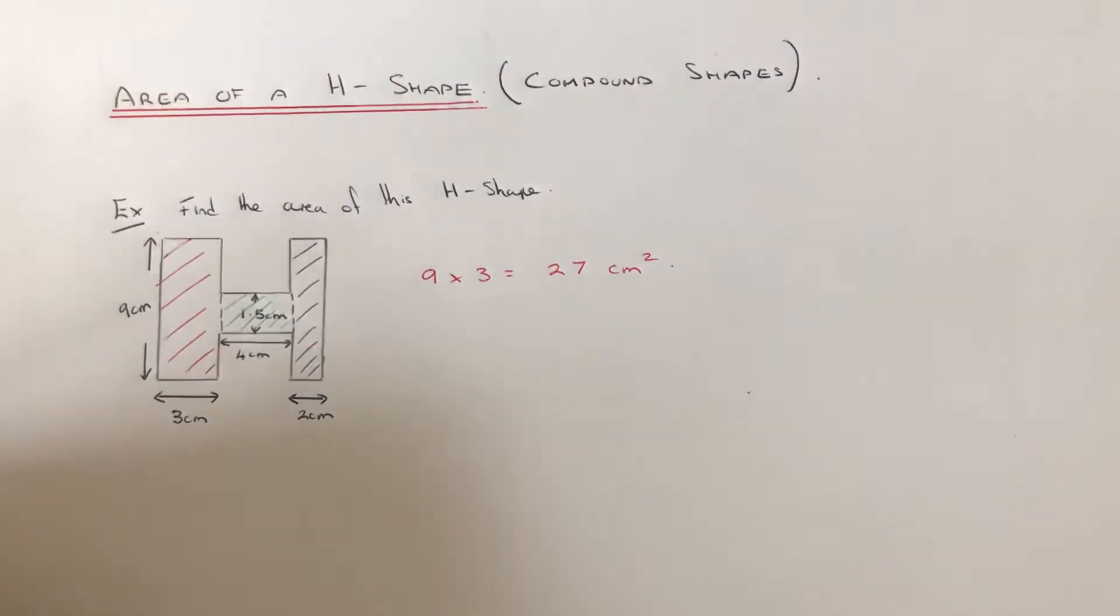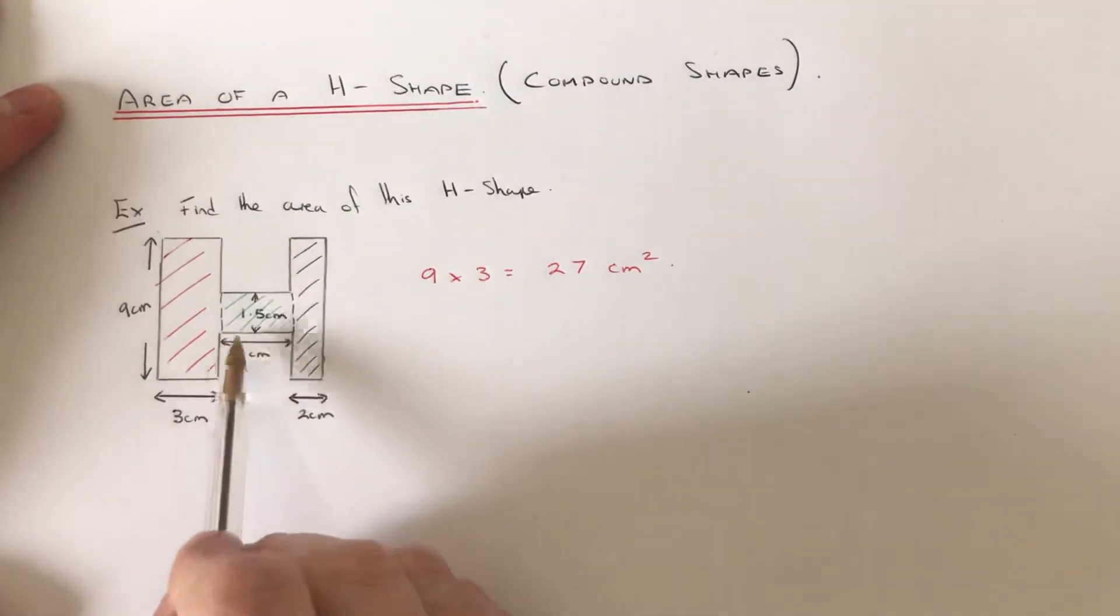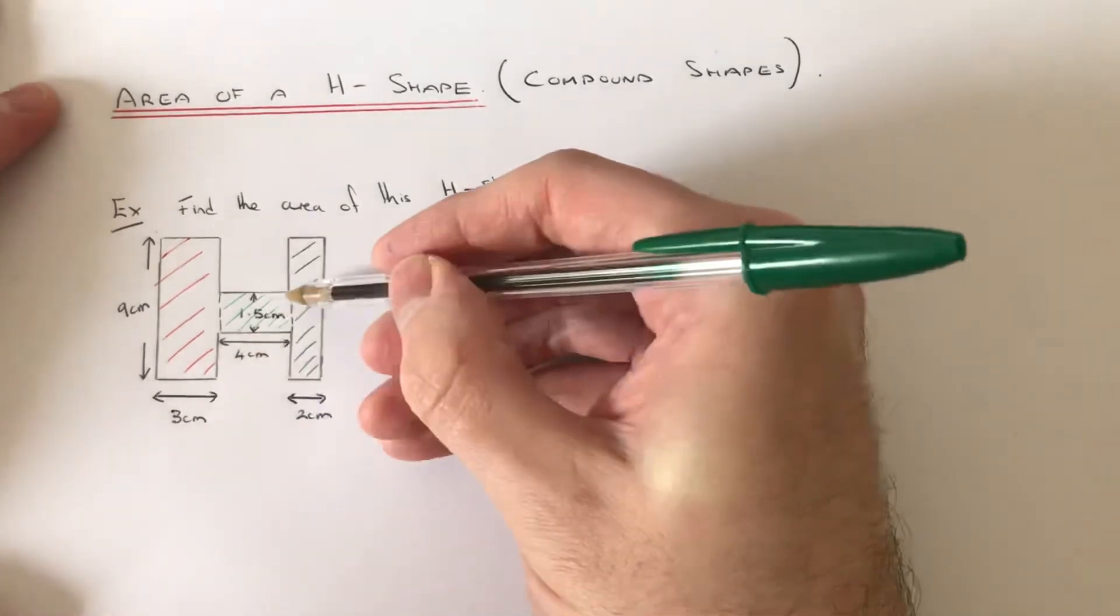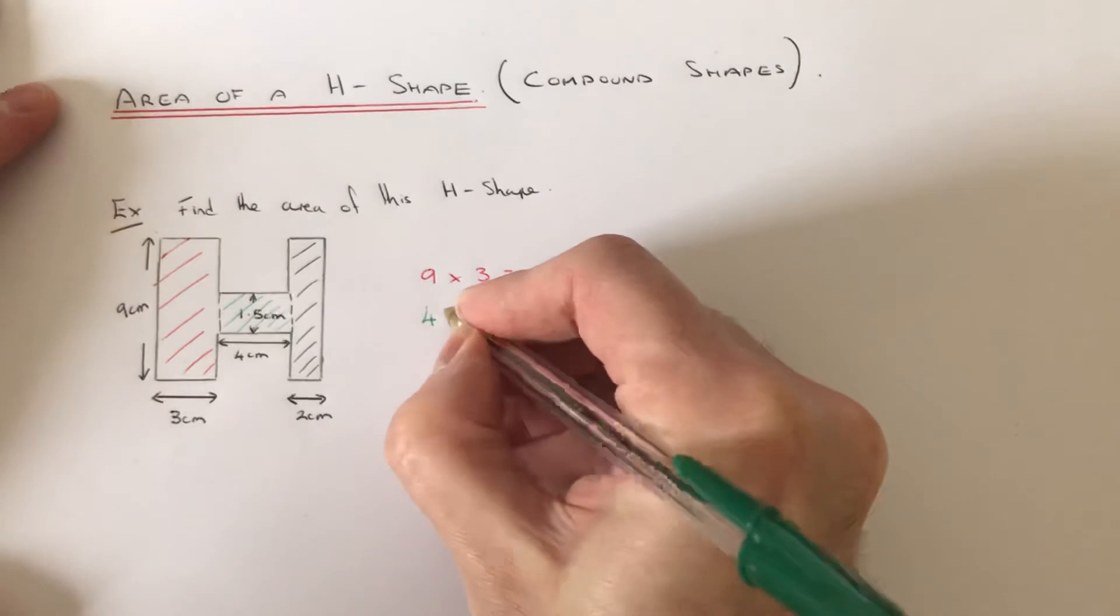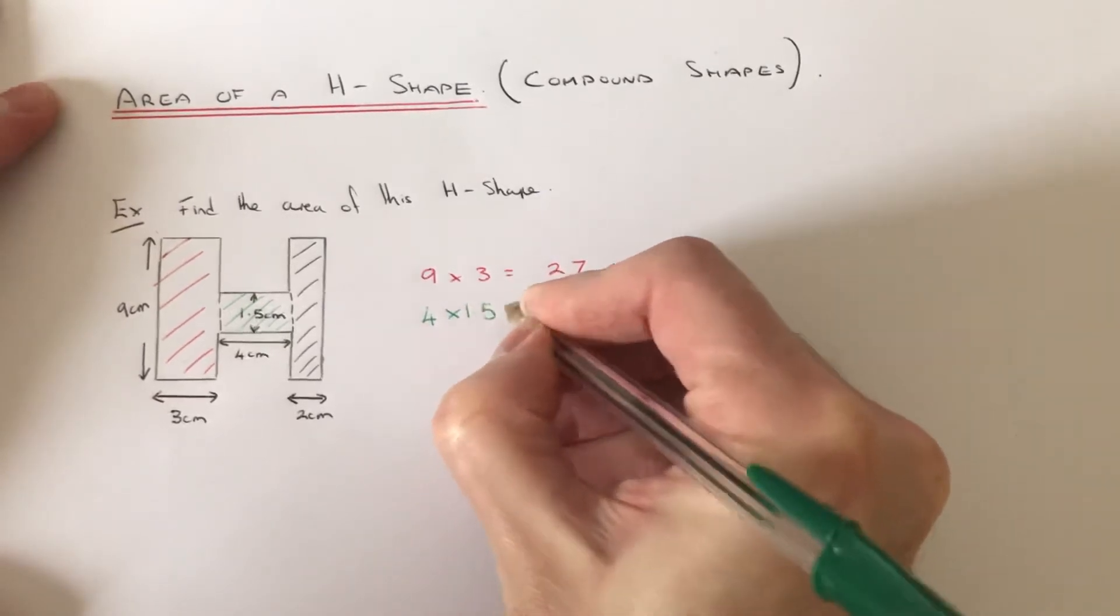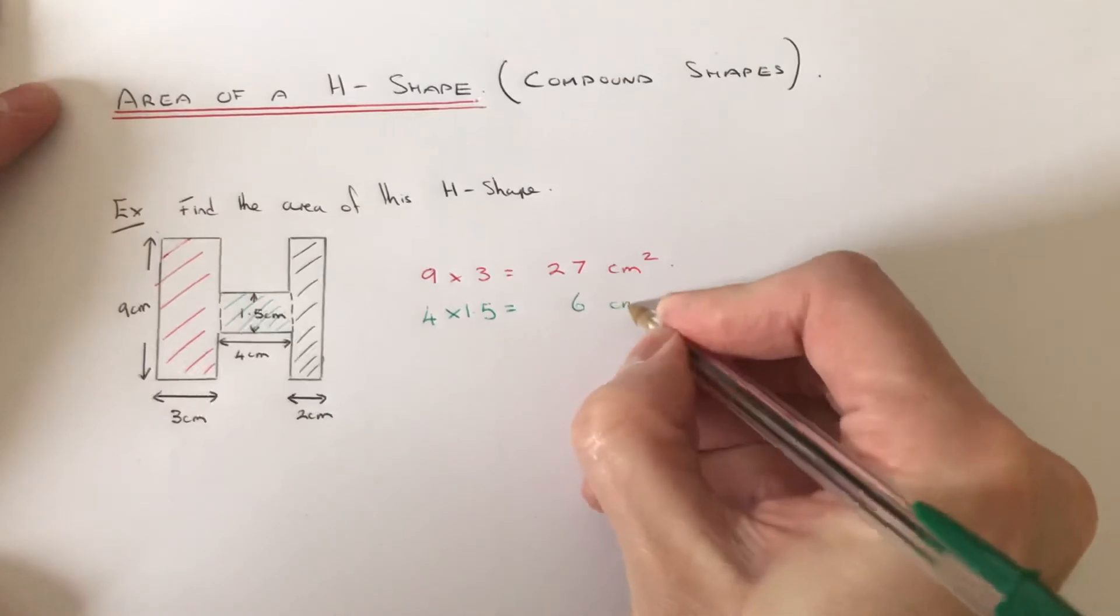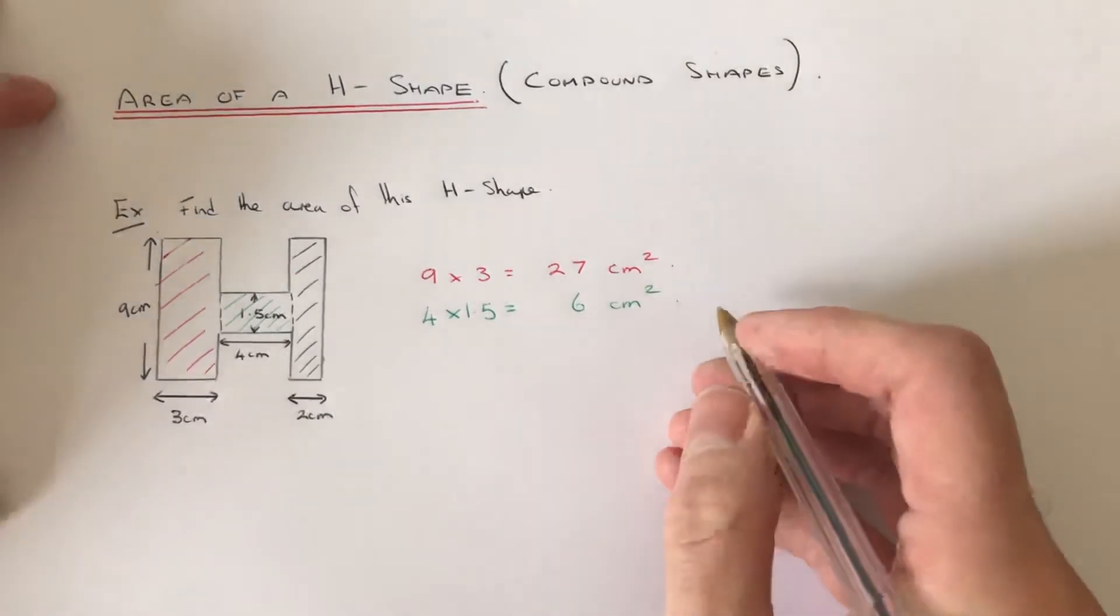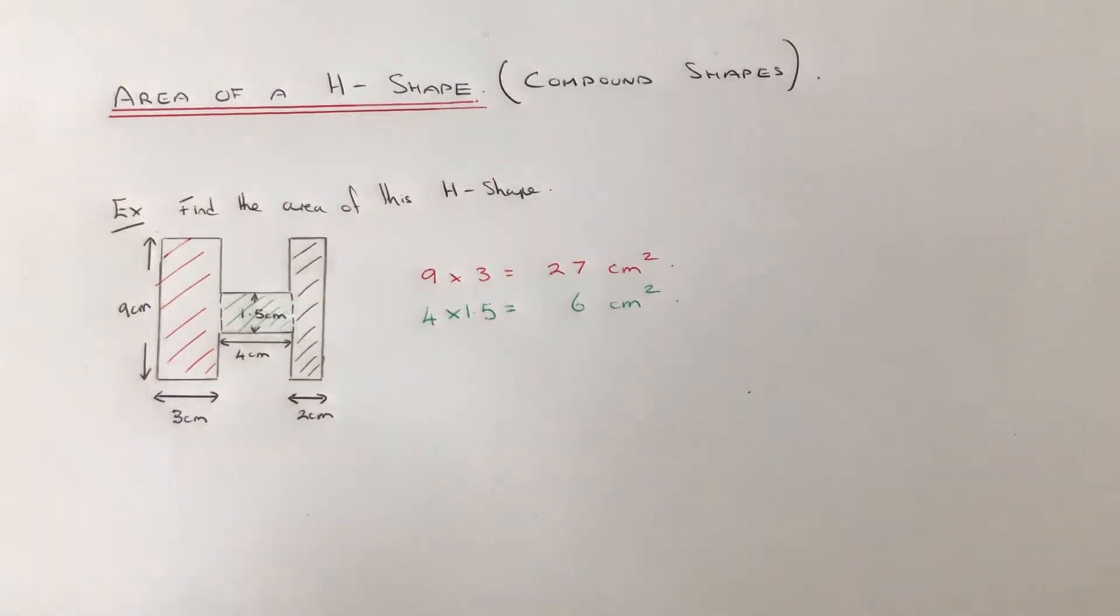Let's do the green rectangle next. This time it will be 4 multiplied by the width, which is 1.5, so that will give me an answer of 6 centimeters squared.